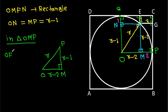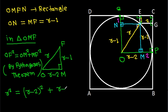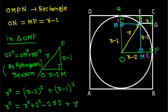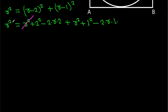Applying the Pythagorean theorem: OF² equals OM² plus MF². So R² equals (R minus 2)² plus (R minus 1)², which gives R² equals R² plus 4 minus 4R plus R² plus 1 minus 2R. The R² terms cancel out.